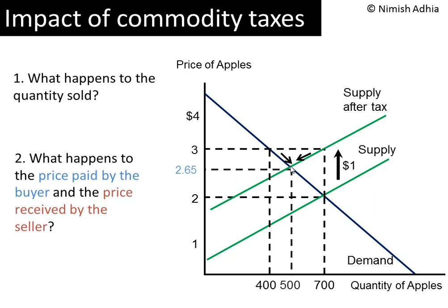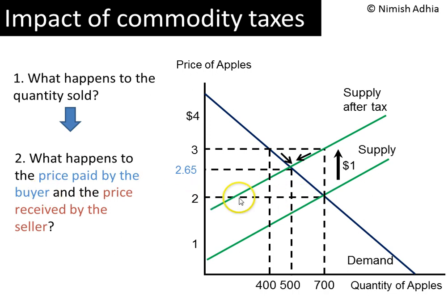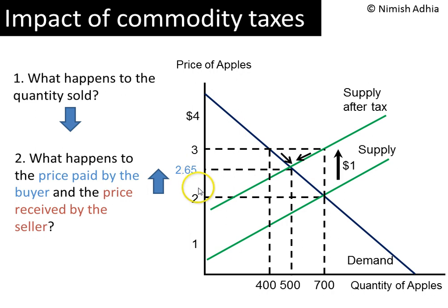At that new equilibrium point, the equilibrium price is $2.65 and the equilibrium quantity is 500. The equilibrium quantity has fallen from 700 to 500 — a commodity tax always reduces the quantity sold. The market price has risen from $2 to $2.65; that's what the buyer has to pay. So the tax increased the price paid by the buyer by $0.65 — not the full dollar, even though suppliers would have liked to raise it by $1.